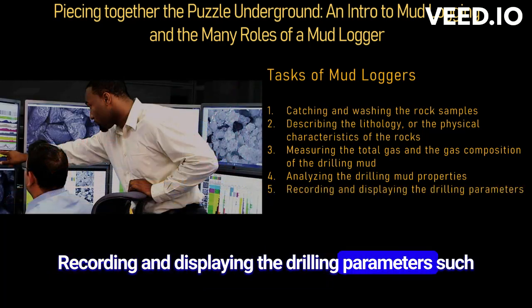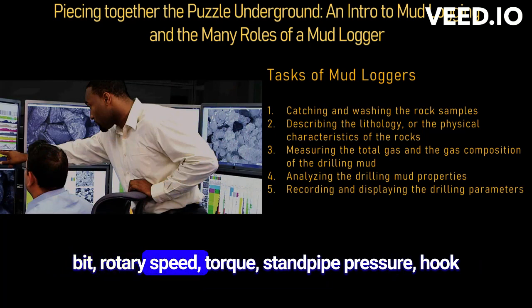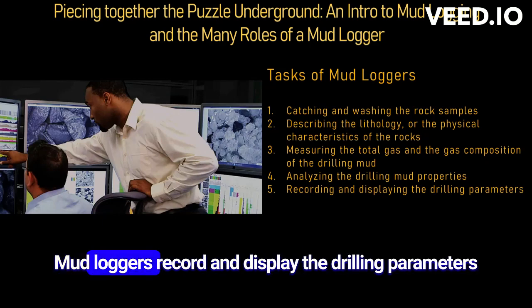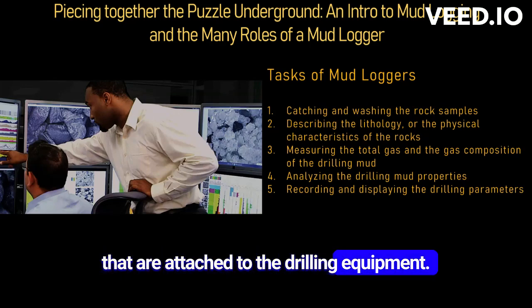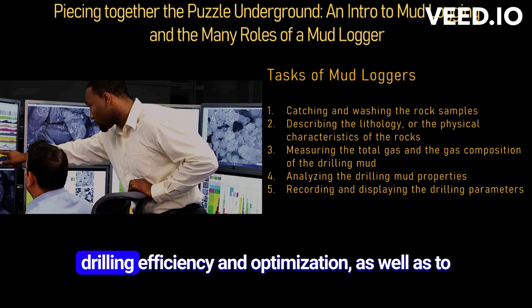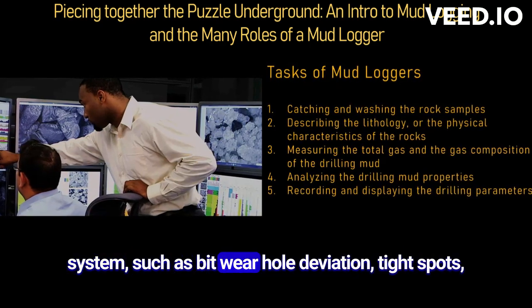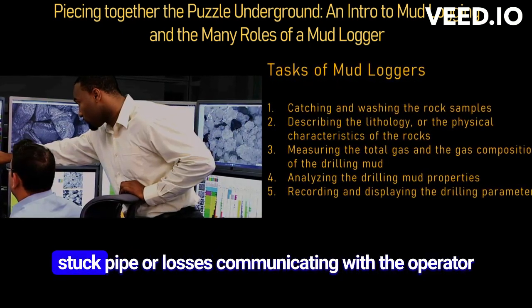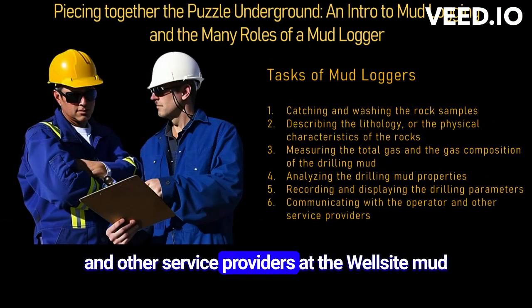Mud loggers record and display the drilling parameters measured by various sensors and transducers attached to the drilling equipment, including depth, rate of penetration, weight on bit, rotary speed, torque, standpipe pressure, hook load, and mud flow. They use the drilling data to evaluate drilling efficiency and optimization, and to detect problems or malfunctions such as bit wear, hole deviation, tight spots, stuck pipe, or losses.